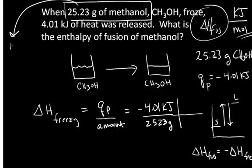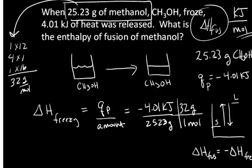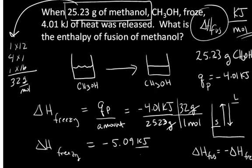And we can do that simply by determining the molar mass of methanol. Let's see, methanol has one carbon, that's 12 grams per mole, I'm estimating this. It's got four hydrogens at one gram per mole, and it's got one oxygen at 16 grams per mole. So the molar mass here for methanol is roughly 32 grams per mole. So I can put that 32 grams per mole of methanol per mole of methanol. In this calculation here, the gram unit is going to cancel. And the answer for the change in enthalpy of freezing is negative 5.09 kilojoules per mole.